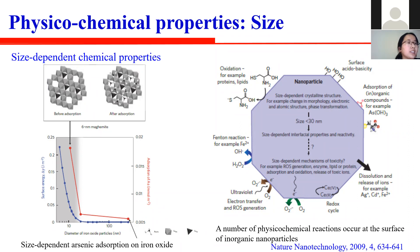This indicates that similar adsorption mechanisms operate over this size range. Surprisingly, for particles smaller than 20 nanometers, the adsorption capacity increases, with 11 nanometer particles absorbing 3 times more arsenic per square nanometer than 20 nanometer particles. These large values indicate a change in the surface structure leading to new surface adsorption sites. The red panel shows a number of physical-chemical mechanisms that occur at the surface of an inorganic nanoparticle.